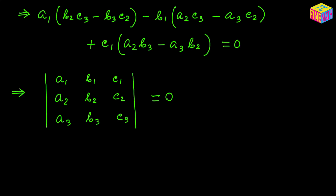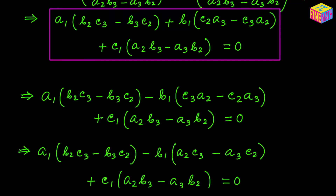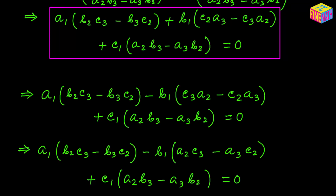If you are not familiar with determinants, not a problem — you can still remember the previous expression we established. If that expression also equals 0, we can say the three lines are concurrent. It's easy to remember: a₁ times (b₂c₃ minus b₃c₂), minus b₁ times (c₂a₃ minus c₃a₂), plus c₁ times (a₂b₃ minus a₃b₂) — that entire expression must equal 0.